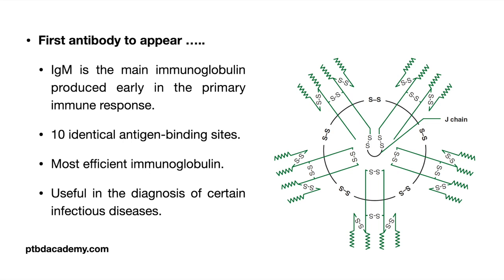IgM is composed of five H₂L₂ units, each similar to one IgG unit, and one joining chain (J chain), bonded with disulfide bonds. IgM is a pentamer with a molecular weight of 9 lakh daltons, has 10 identical antigen binding sites, and thus a valence of 10. It is the most efficient immunoglobulin for agglutination and complement fixation, and is important in defense against bacteria and viruses.